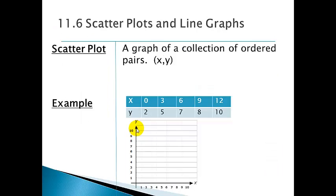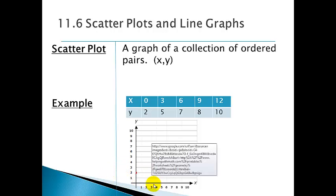It's just a graph of a collection of ordered pairs. Remember our ordered pairs are your (x,y) values. Here I have an x-y table, and we'll go ahead and just plot these and see if we can see some type of relationship. At zero I have two, and at three I have five.